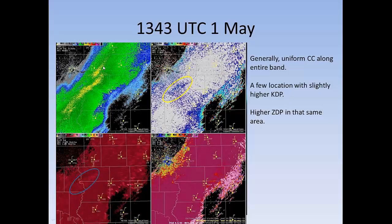There's a band of snow just to our east. You can see there is an area where there's slightly higher reflectivity, a little bit higher ZDR. In the lower left is KDP — there's nothing really there, maybe a little bit higher but it's pretty much noise in that area. And you can see that in most places the CC is up around 0.99 or higher, except for a small area right along the South Dakota-Iowa border.